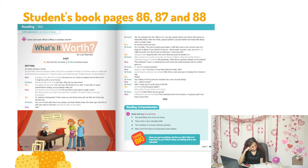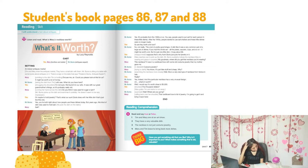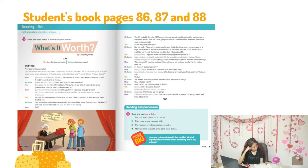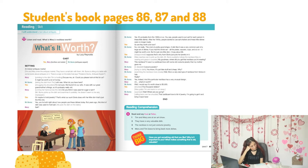Taking the dish, Mr. Burns says: 'Let's see, what do you have here?' Mary, shrugging: 'I'm not sure — we found it in our attic. It was with our great-grandmother's things, so it's probably really old.' Mary runs her hand across the dish: 'Do you think it was used for sugar or jam?' Mr. Burns examines it carefully, not very impressed. Tim says: 'Or maybe for old jewelry — that's what our aunt Gloria does with a little dish just like this one.' Mr. Burns replies: 'You're both right about how people use these dishes today, but years ago this kind of dish was used to hold salt.'